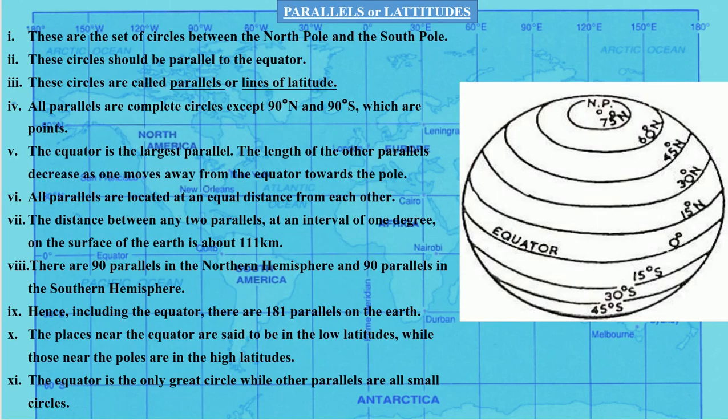We already studied in the very first video about parallels. Parallels are the horizontal lines, as you can see here. These are the set of circles between the North Pole and the South Pole, running from West to East, and these circles are parallel to the equator. Since these lines run parallel to each other, they are called lines of latitude or parallels of latitude.